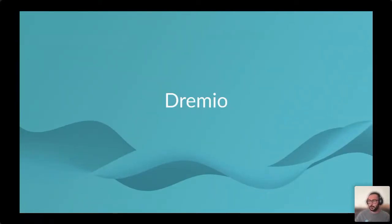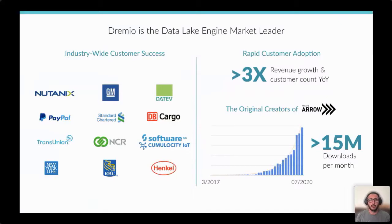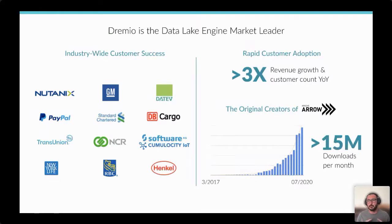Dremio was started in 2015 in stealth mode, with commercial activities beginning in 2018. Most importantly from a technical perspective, Dremio's co-founder Jacques Nadeau is the original co-creator of Apache Arrow along with Wes McKinney. Everything in Dremio is based on Arrow: reading information, massive parallel processing, SQL execution via Arrow and Gandiva, and even data retrieval via Apache Arrow Flight.